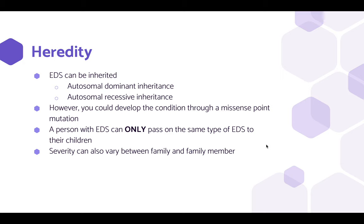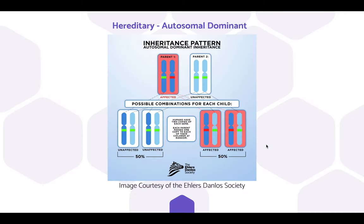EDS can be inherited through autosomal dominant inheritance or autosomal recessive inheritance. However, you could also develop the condition through a missense point mutation. A person with EDS can only pass on the same type of EDS to their children, and severity can vary between family members. In an autosomal dominant pattern, an affected parent has a 50% chance of passing EDS down to their child. This image is courtesy of the Ehlers-Danlos Society.